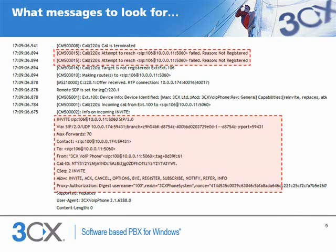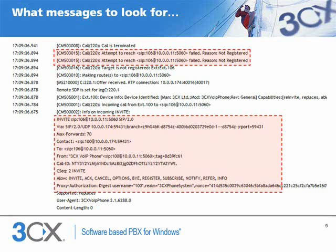When a call cannot be delivered or some other process cannot be performed, the server activity log will very often report a message indicative of the reason — with the exception of failed requests that never reach the PBX at all. For example, if a call cannot be delivered to an extension because it is switched off, the PBX will report that the destination is unregistered. If verbose logging is enabled, it will also report the full contents of the SIP message that triggered the event, so examining the log messages while the issue is replicated will very often reveal what action the PBX performed and why.